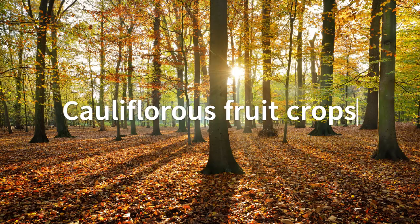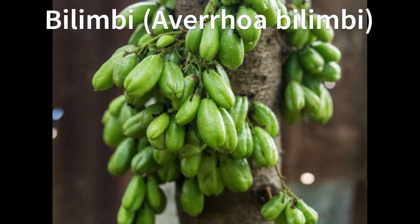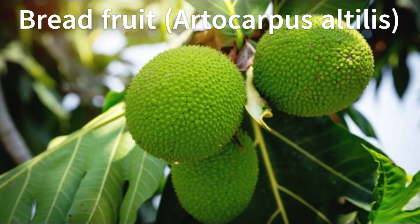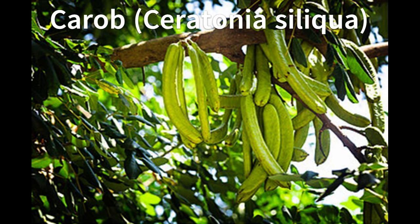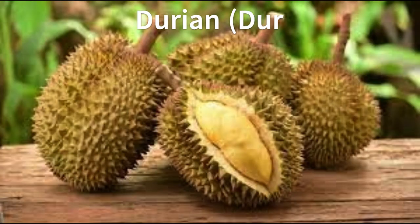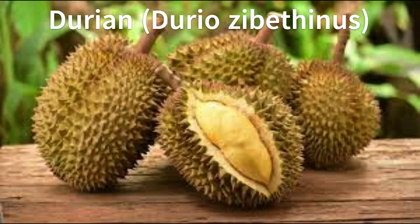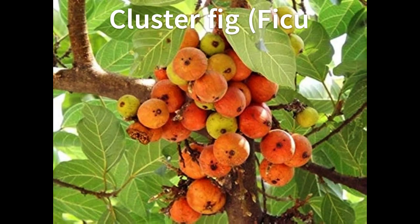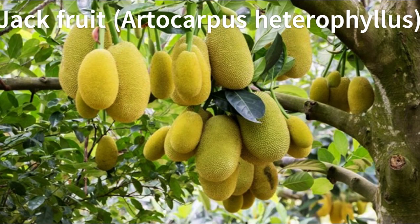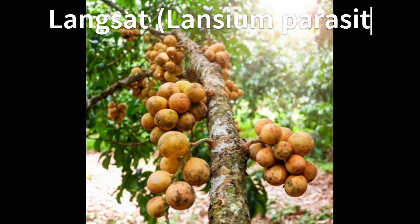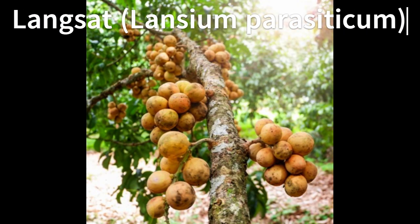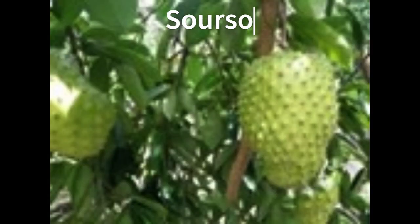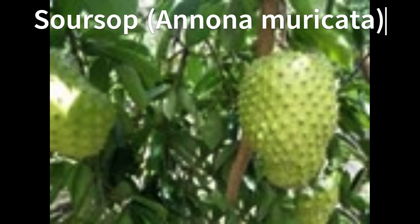Cauliflorous fruit crops include: Bilimbi, botanically known as Averrhoa bilimbi; Breadfruit, scientifically called Artocarpus altilis; Carob, botanically called Ceratonia siliqua; Durian, scientifically known as Durio zibethinus; Cluster fig, botanically called Ficus racemosa; Jackfruit, scientifically known as Artocarpus heterophyllus; Langsat, botanically called Lansium parasiticum; Papaya, scientifically known as Carica papaya; and Soursop, botanically called Annona muricata.